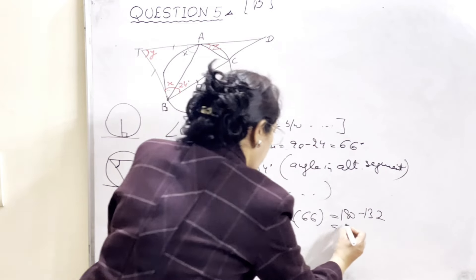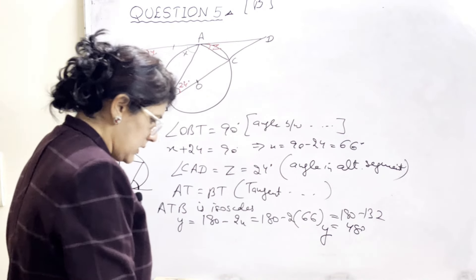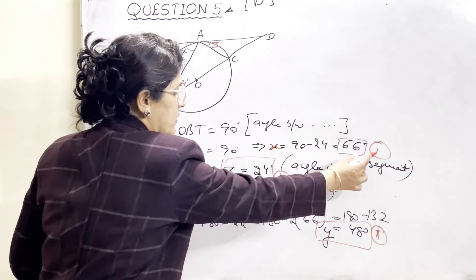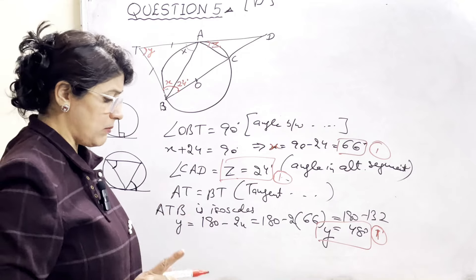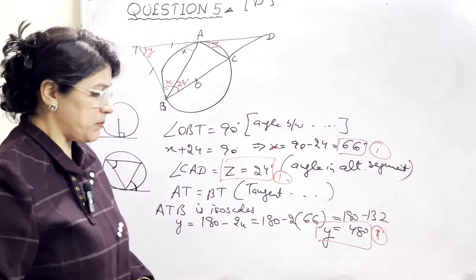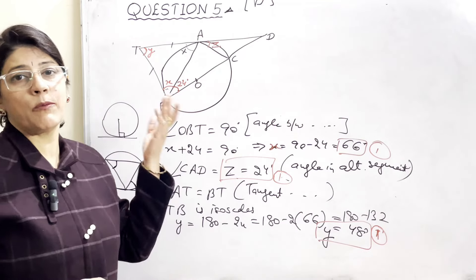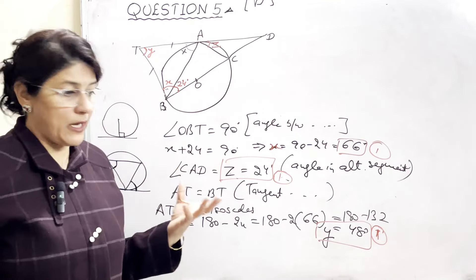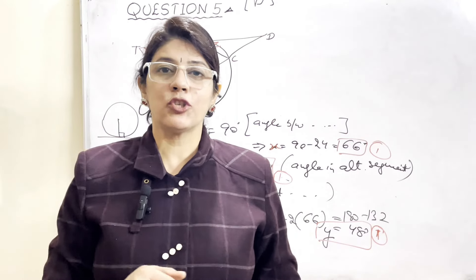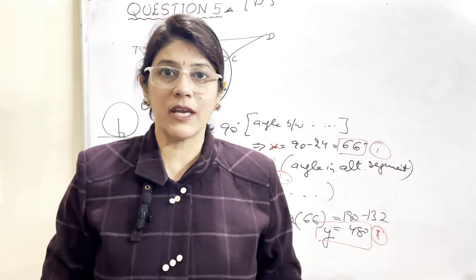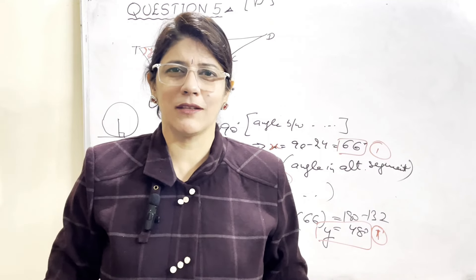Marking scheme: X = 66 ka one mark, Z = 24 ka one mark, Y = 48 ka one mark. Fourth mark tab milega jab aap saari theorems bracket mein sahi se likh denge. Agar koi bhi reason nahi denge toh minus 1 ho jaata hai. Theorems achhe se seekhni padegi. Circle pe video bani hui hai mere channel par, usse help le sakte ho. Thank you for watching till then — keep watching, sharing and subscribing.